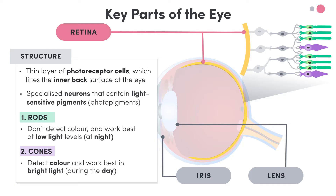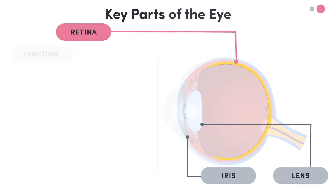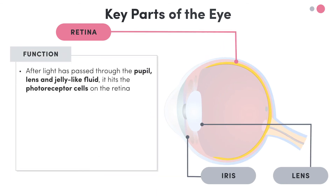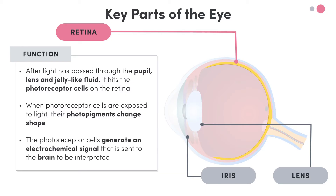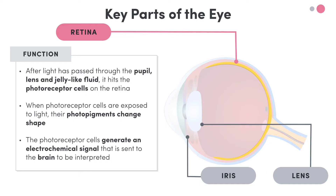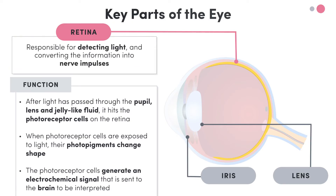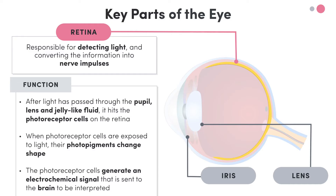But how do they work? After light has passed through the pupil, lens and jelly-like fluid, it hits the photoreceptor cells on the retina. When the photoreceptor cells are exposed to light, their photopigments change shape. The photoreceptor cells then generate an electrochemical signal that is sent to the brain to be interpreted. Just remember that the retina is the part of the eye responsible for detecting light and converting this information into nerve impulses.